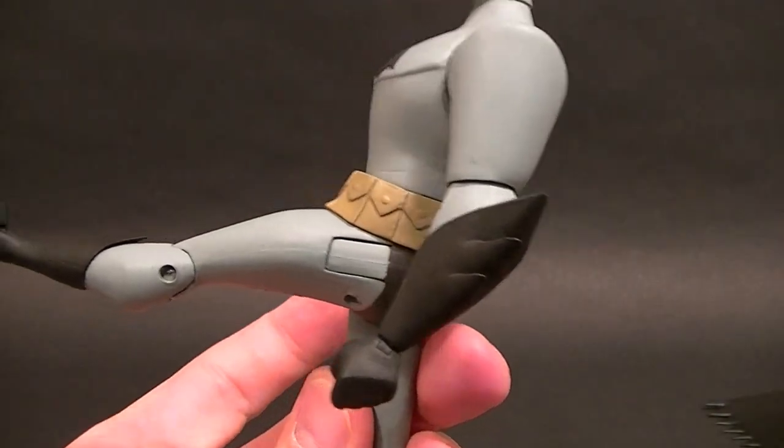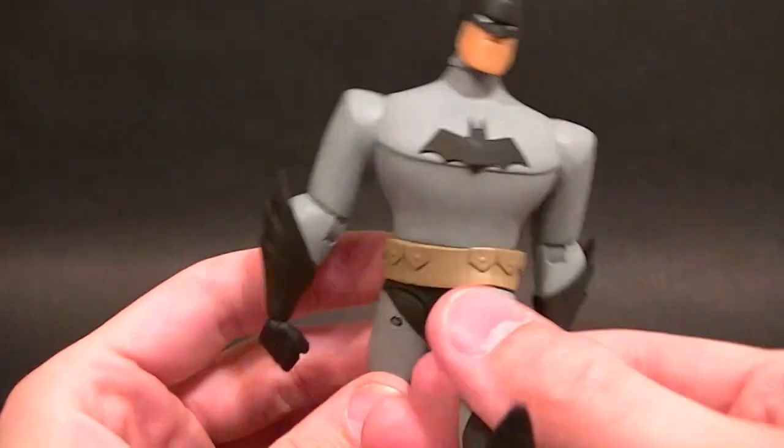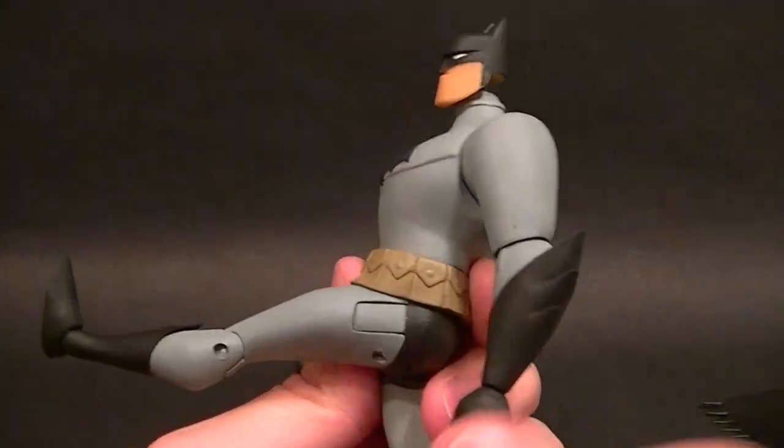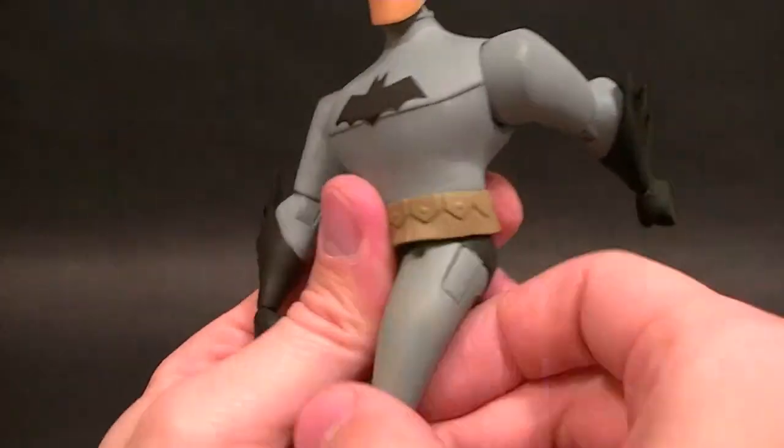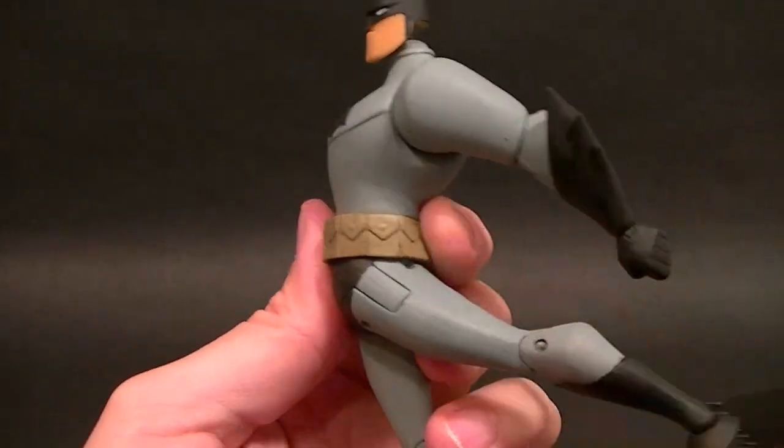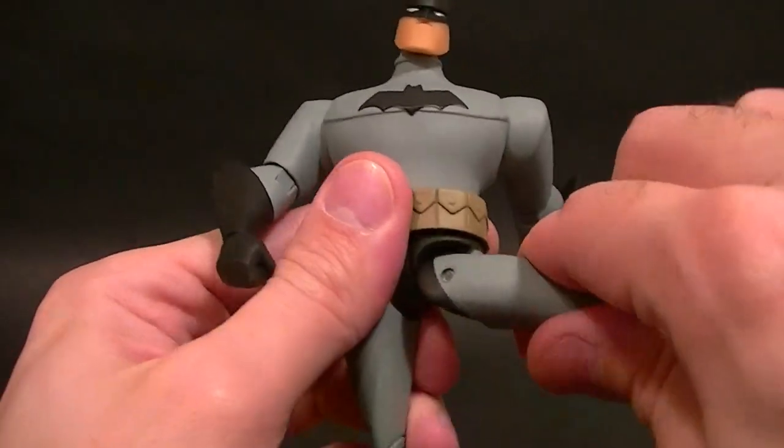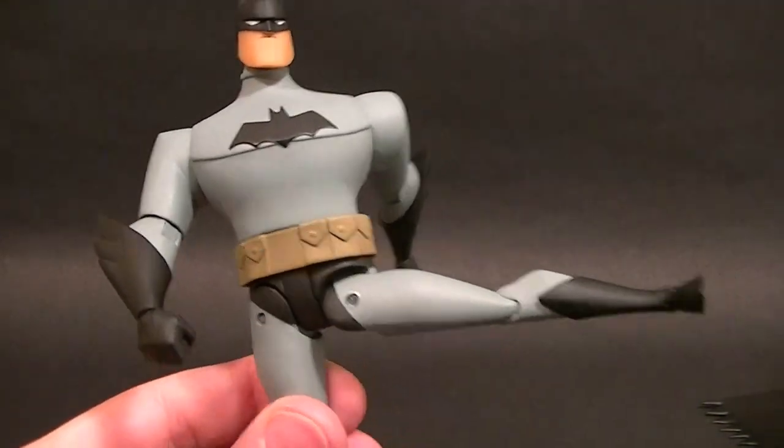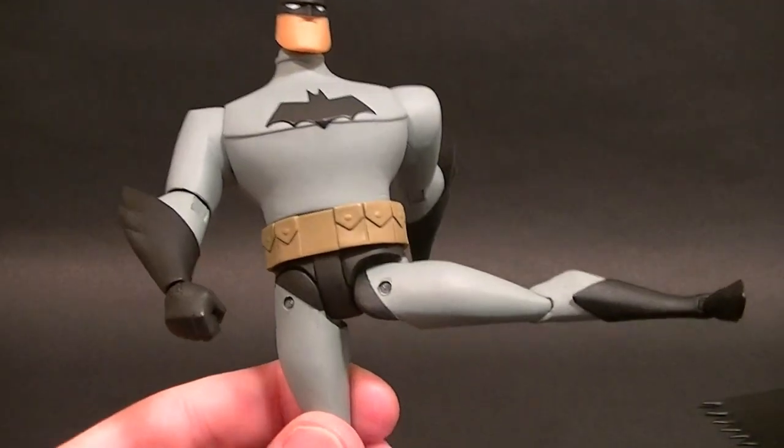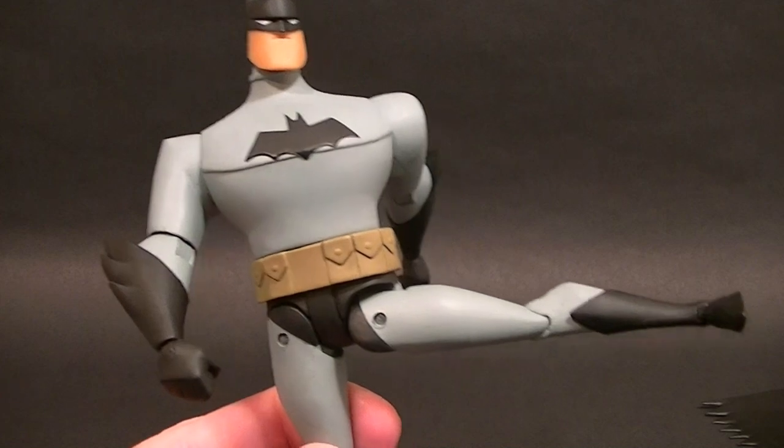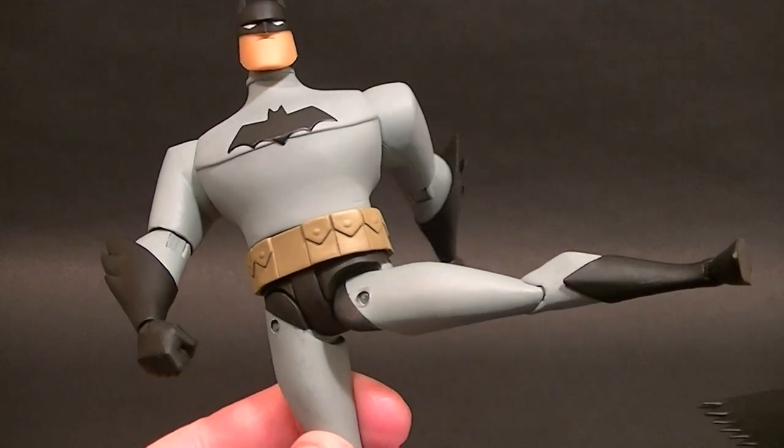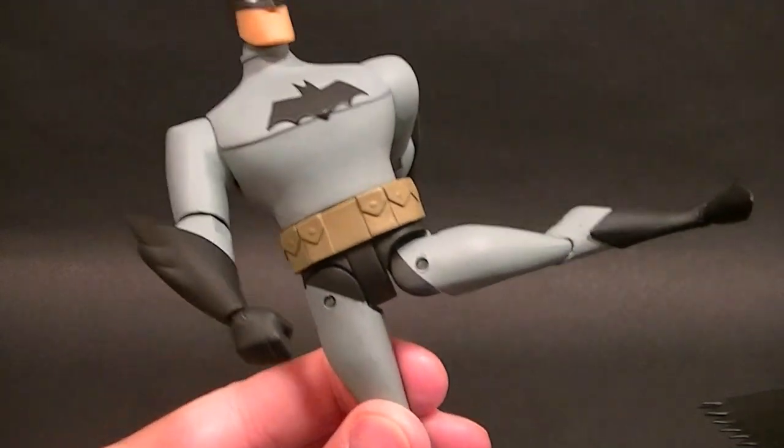So the legs can come just about all the way forward so that's okay, they go back pretty good ways also so that's pretty good. Going out to the side, very similar to the DC Universe Classics figures, it's a little bit of an ugly design for my liking but it's functional so I'll take it. It kind of ruins the sculpt but it's not bad once you get it posed, you kind of ignore that.